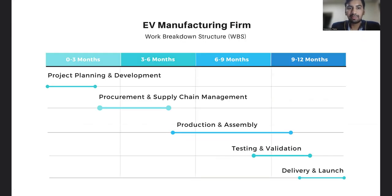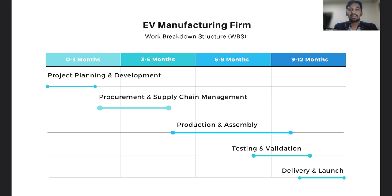An EV manufacturing firm, based on its structure, is divided into five phases. First is project planning and development. Second is procurement and supply chain management. Third is production and assembly. Fourth is testing and validation. And fifth is delivery and launch.